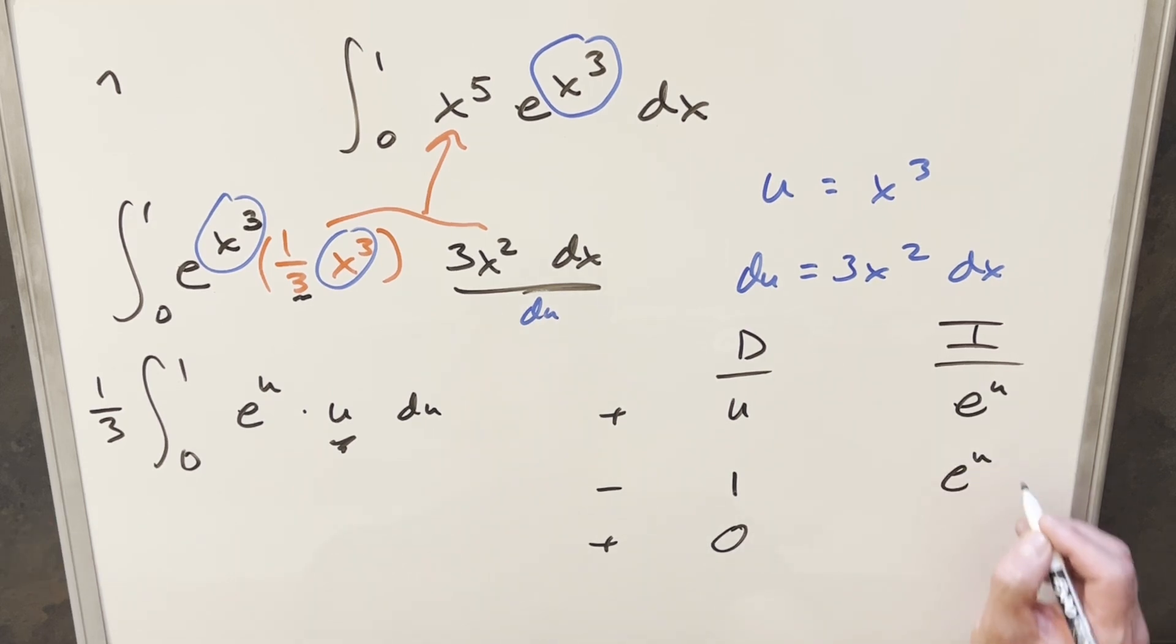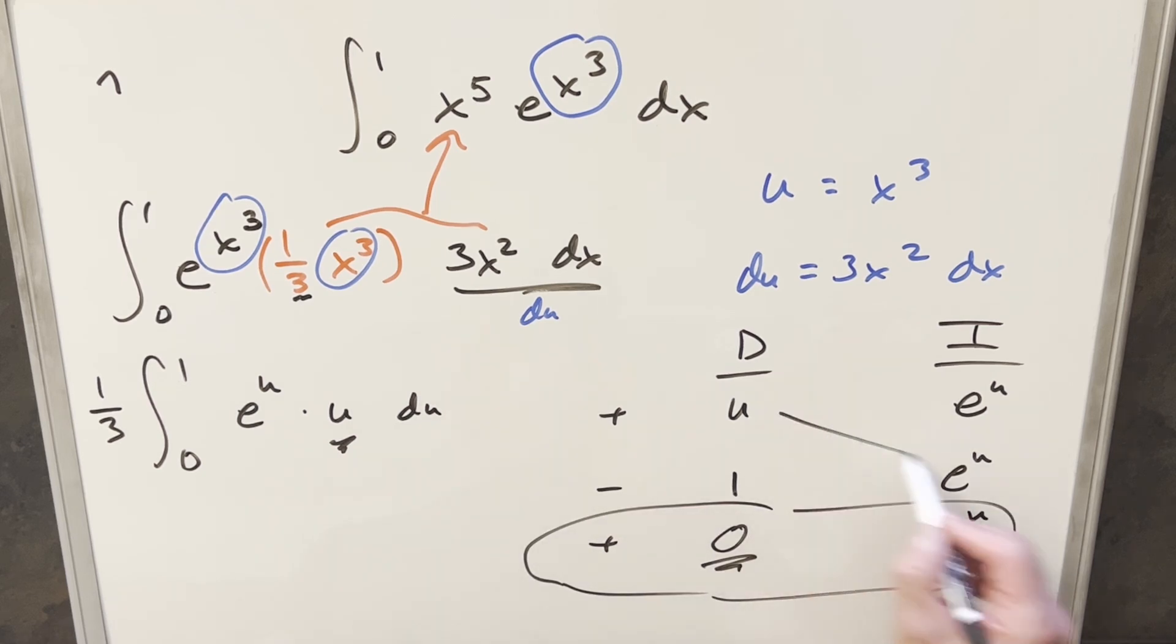Then over on the right, integral of e to the u, e to the u. Do it one more time. And we're all set. Now, we don't have to worry about the last row because we've got a 0 in there. So we're not integrating this one.